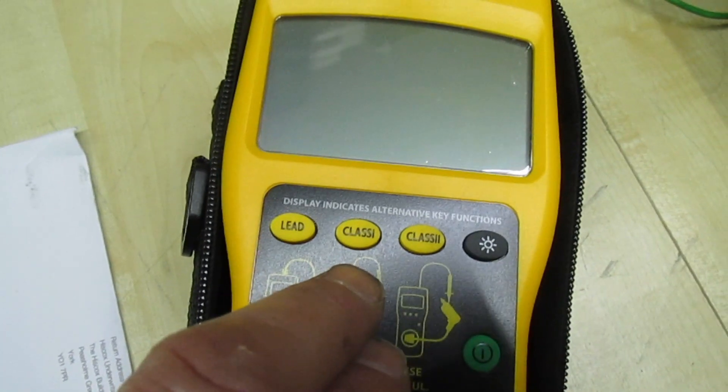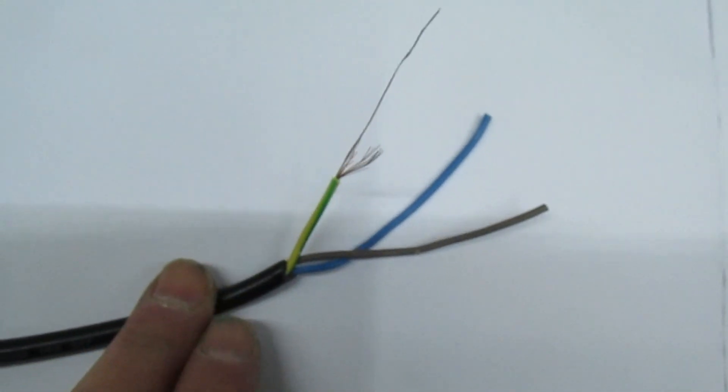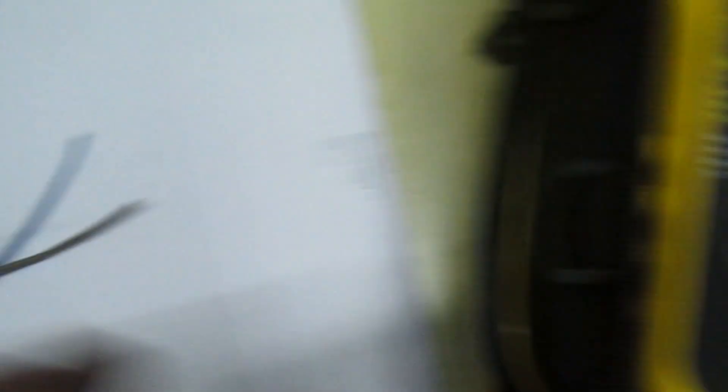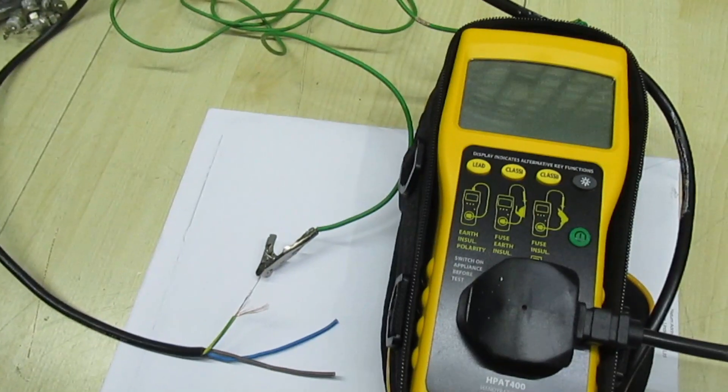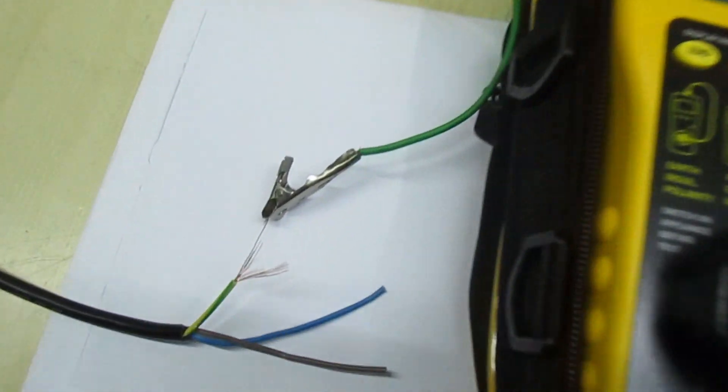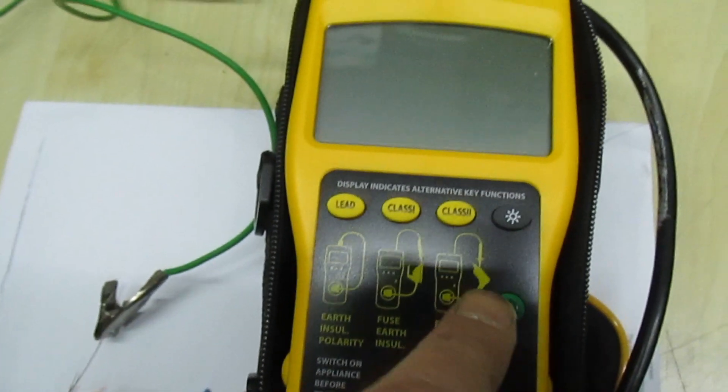So let's first do a class one earth bond test with this frayed wire on this Martindale PAT tester. Right so here we go, we're all set up for a PAT test. You can see I've clipped onto the frayed wire there so let's turn it on.